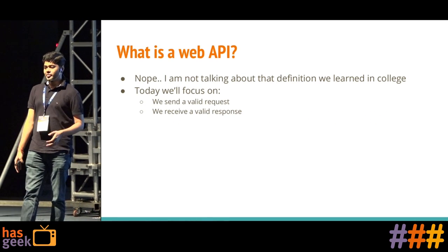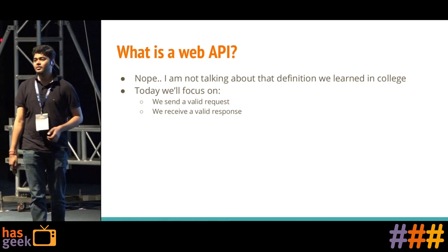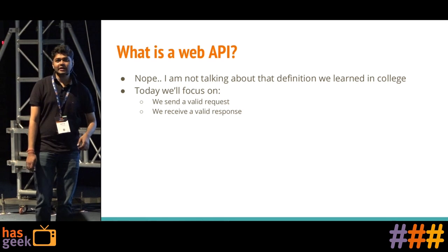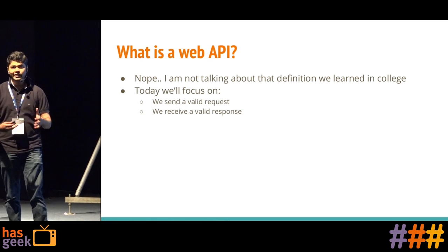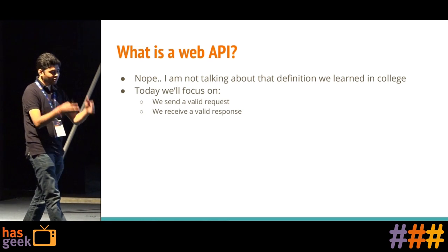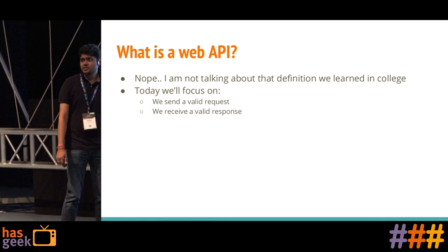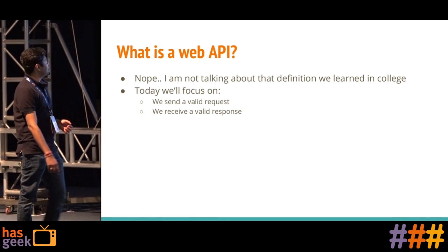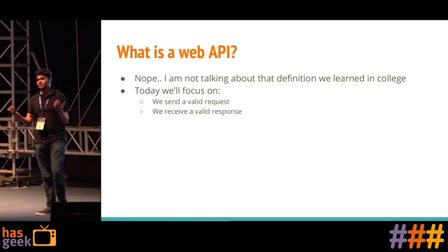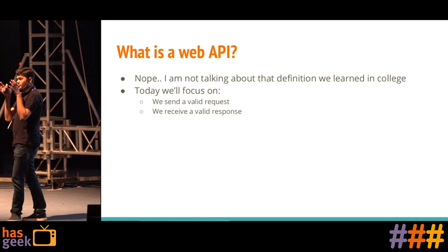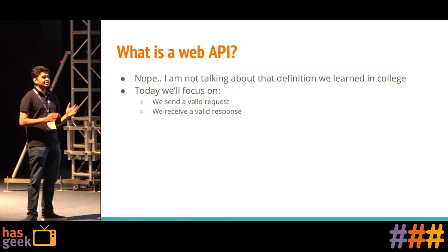So let's talk about APIs. What is an API? I'm not talking about the standard definition that we learned in graduation days. I'm more interested in a very simplistic, very narrowed-down version of what is an API. Since I don't see any hands raised, I'm just going to say that an API is something where we send a valid request and we receive a valid response. Today we are just going to focus on those two things: send a valid request, receive a valid response.